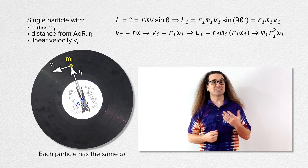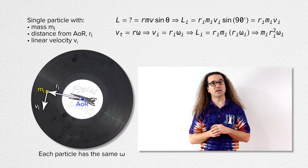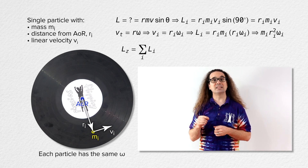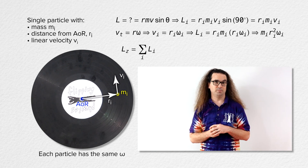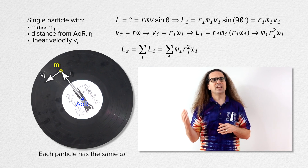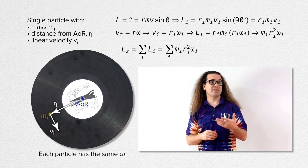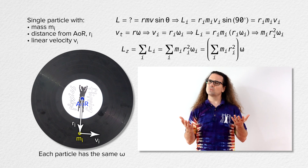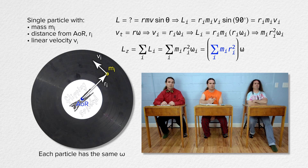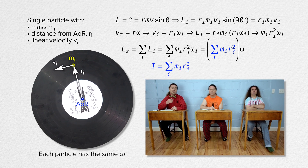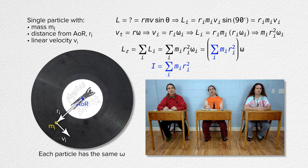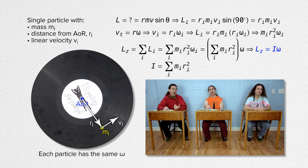Now we can find the angular momentum of the entire record by taking the sum of the angular momenta over all the particles in the record. The angular momentum of the entire rigid body in the z direction equals the sum of the angular momentum of each particle. We substitute in the equation for each particle, and because each particle has the same angular speed omega, we can bring that out from the sum. That parenthetical quantity is the definition of moment of inertia, or rotational inertia. The angular momentum of a rigid body equals rotational inertia times angular velocity — and now we've derived it.